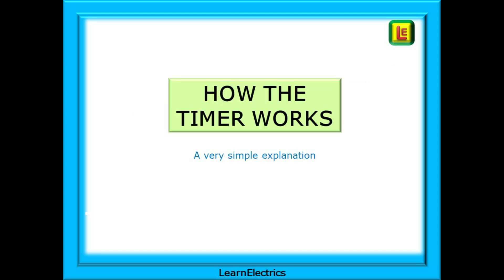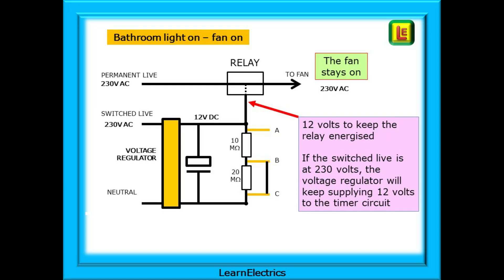Let's have a very simple, very basic explanation of how the timer works. In this scenario the bathroom light is on. The permanent live is permanently energized and the switch live is also energized because the light is on. The 230 volts at the switched live passes through a voltage regulator and comes out as typically 12 volts DC. This 12 volts pulls in the relay and allows 230 volts to pass through the relay and make the fan turn.